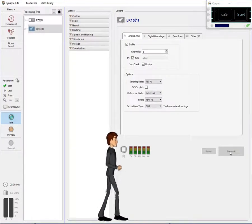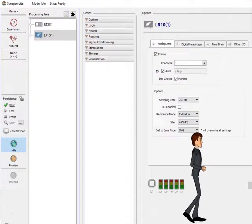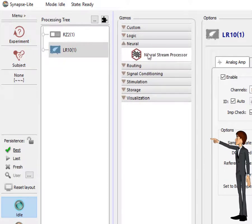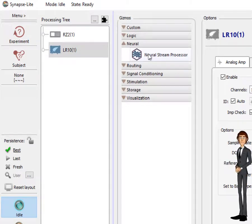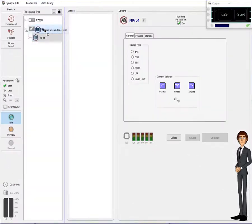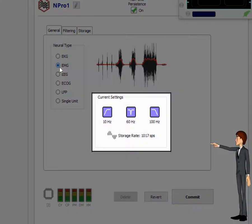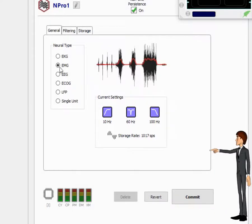In Synapse, we add functionality to an experiment by adding gizmos to the processing tree. Let's add a gizmo from the neural category to filter and save our EMG signal. Drag and drop the neural stream processor gizmo on the LabRat icon in the processing tree. In its options dialog, select the EMG radio button, and proper settings for filtering and data saving will be selected automatically.